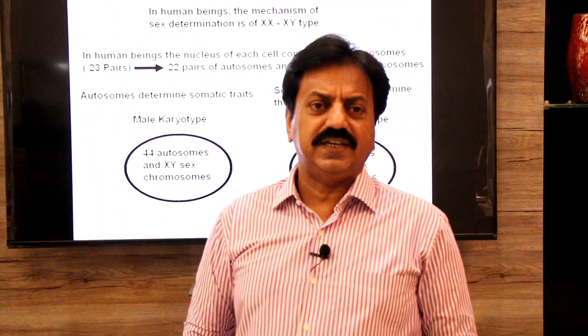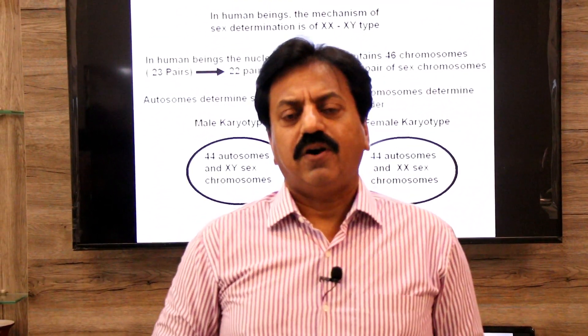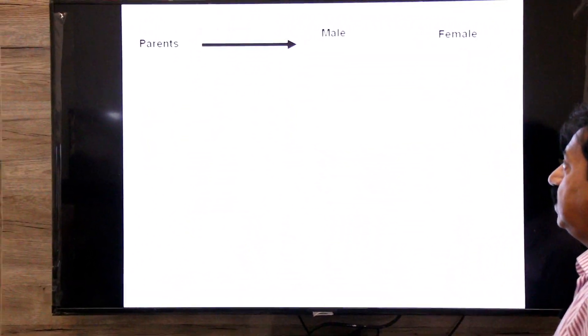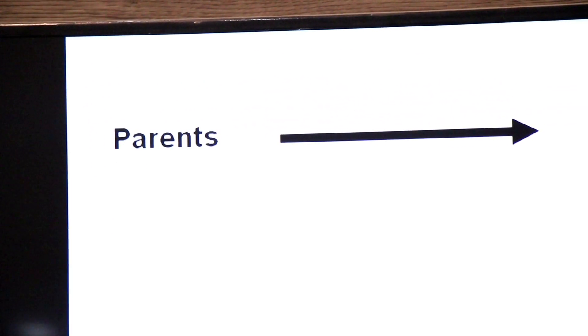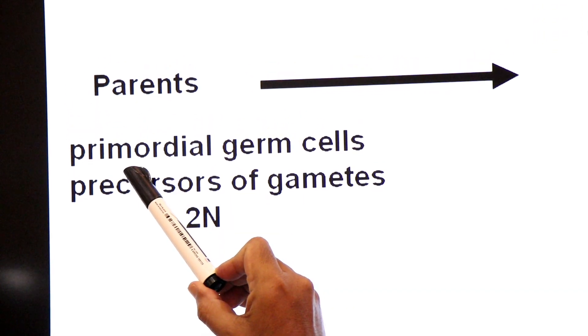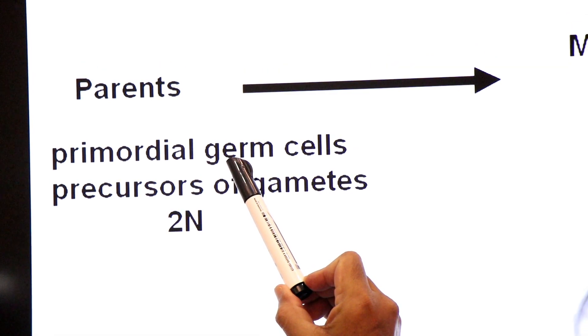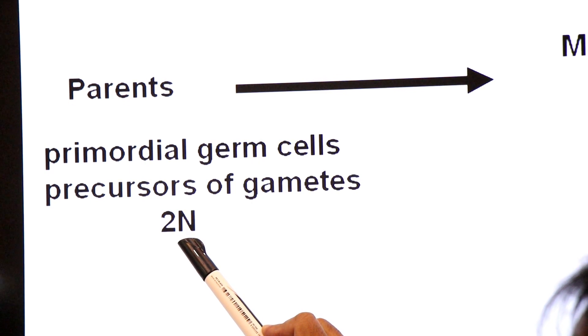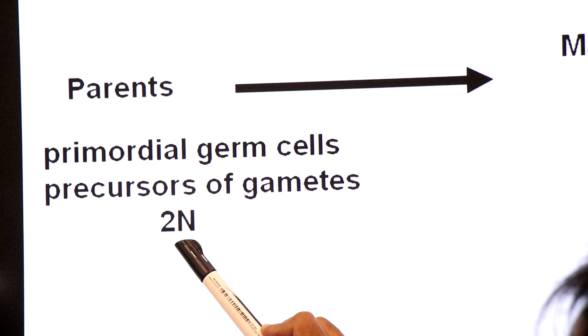Now we will move to the pattern or mechanism of sex determination in human beings — male and female. The precursors of gametes are primordial germ cells, which are always diploid in number. These are the cells which give rise to reproductive cells: sperms in male and ova in female.